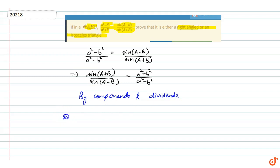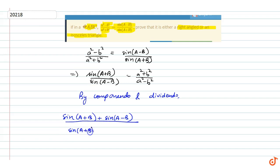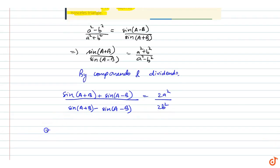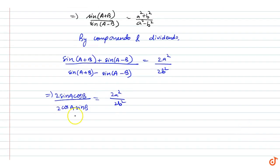we will get [sin(A+B) + sin(A-B)] / [sin(A+B) - sin(A-B)] equals 2a²/2b². Simplifying the left side using sum-to-product formulas: sin(A)cos(B) / cos(A)sin(B) equals a²/b².